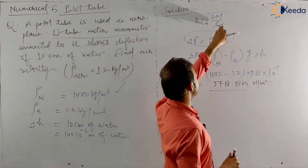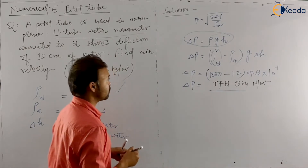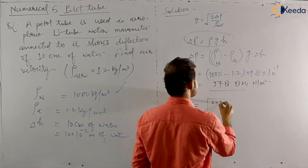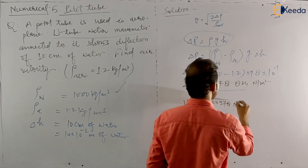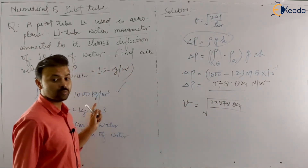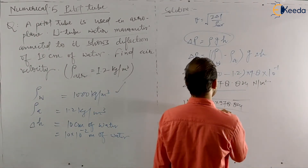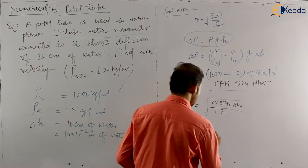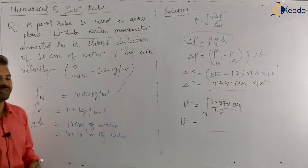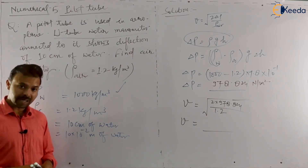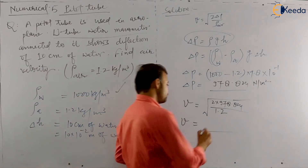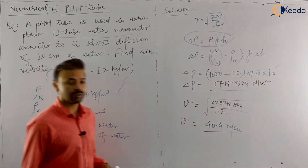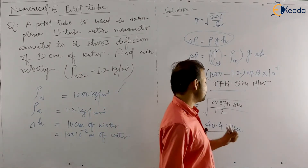Now you have delta P and rho_air, so the velocity of air can be calculated from the pitot tube formula: V = √(2ΔP / ρ_air) = √(2 × 978.824 / 1.2). All units are in the MKS system. Calculate V using your calculator. V should come out as 40.4 meters per second. Verify it — the answer should be 40.4 m/s.